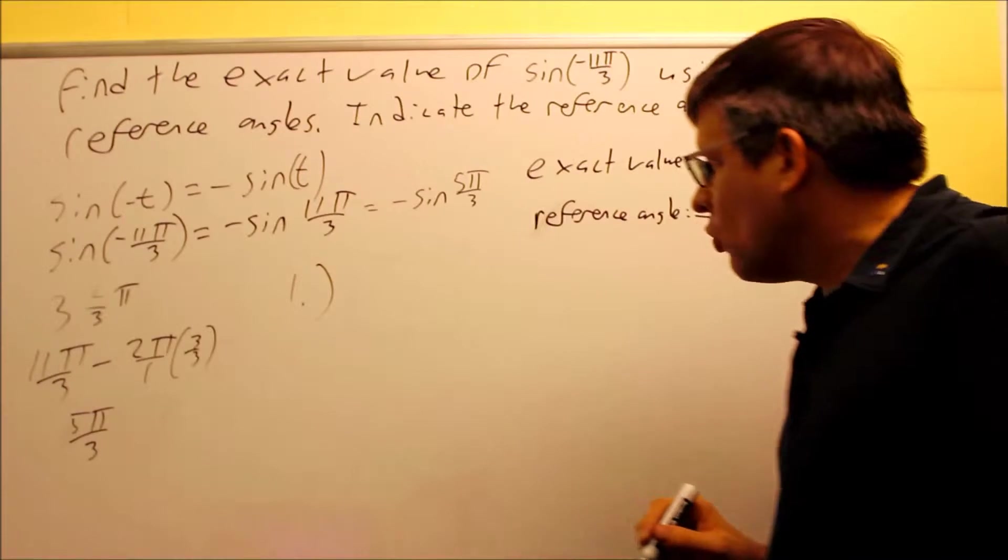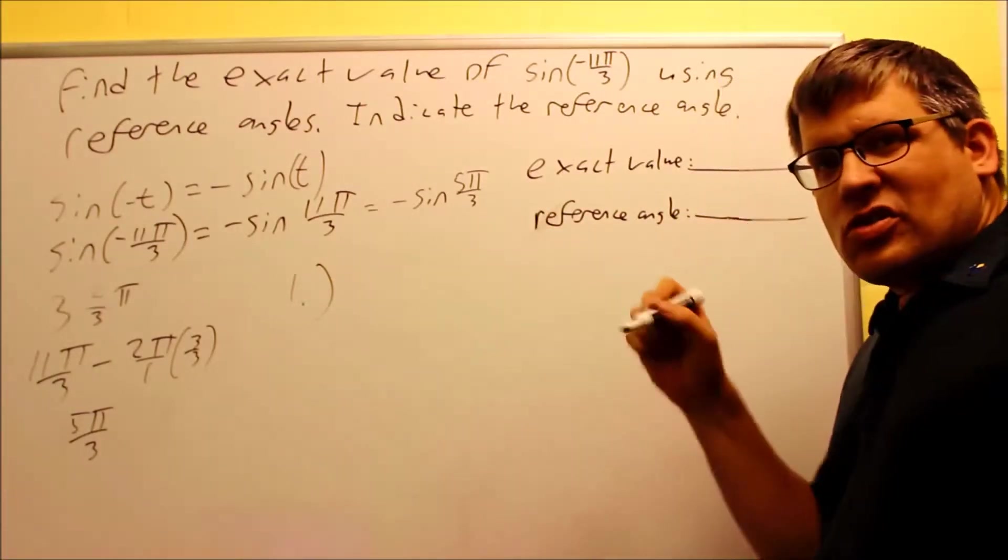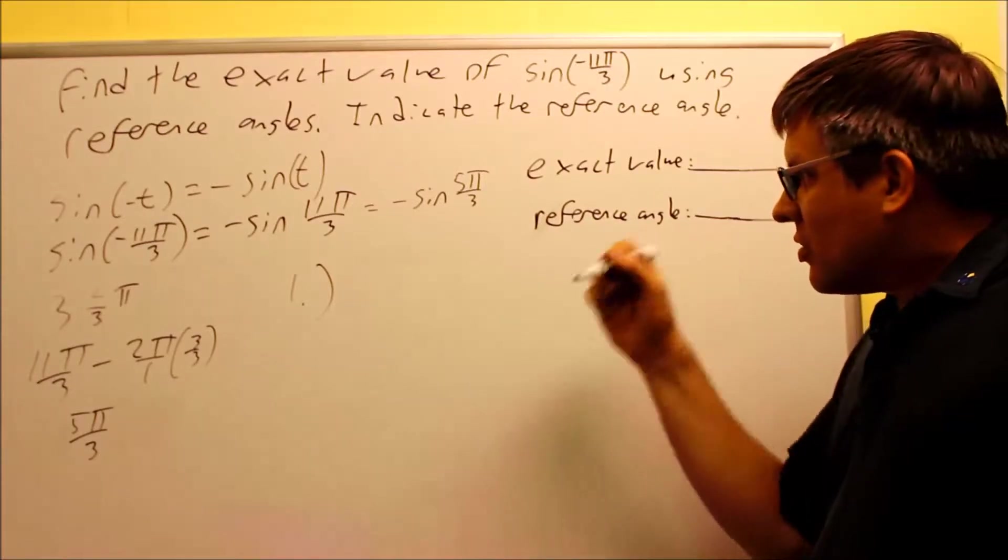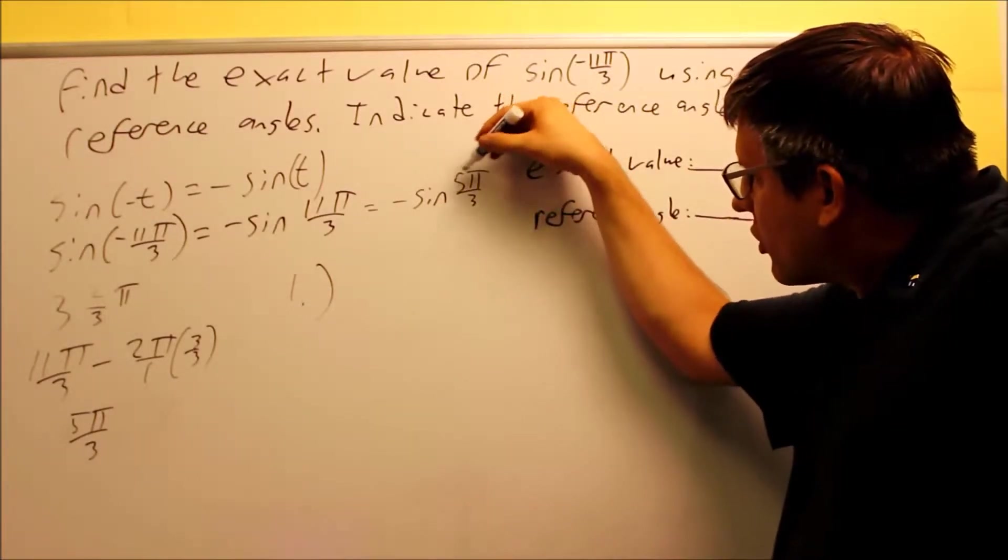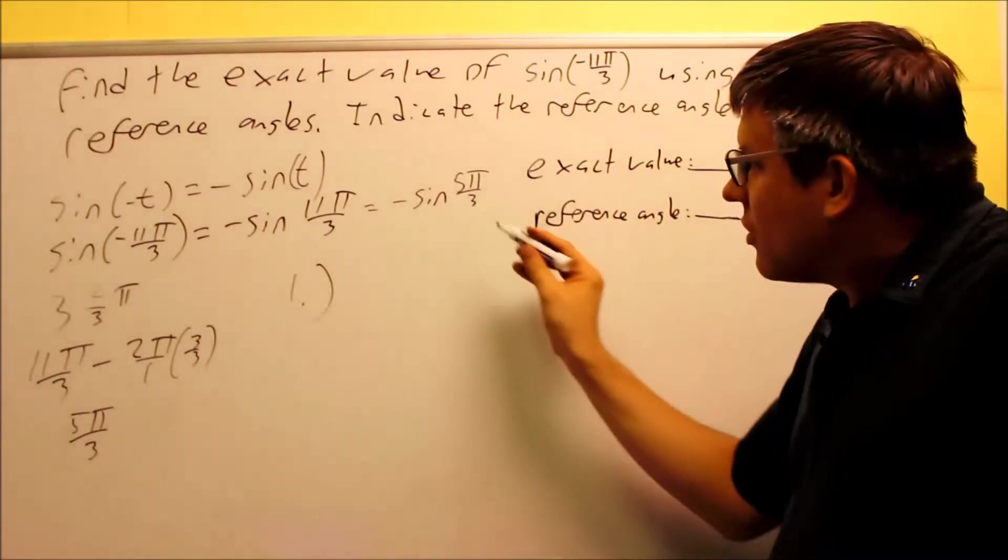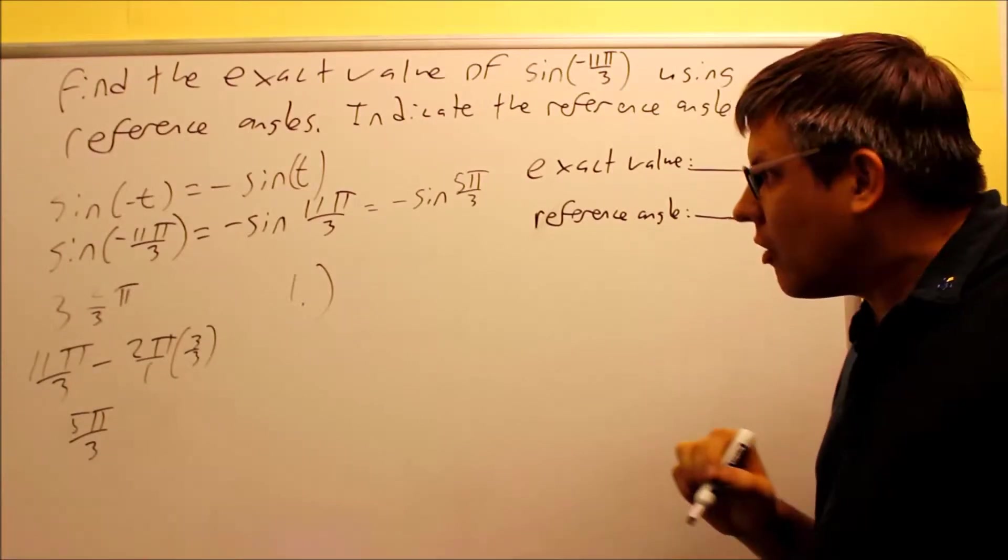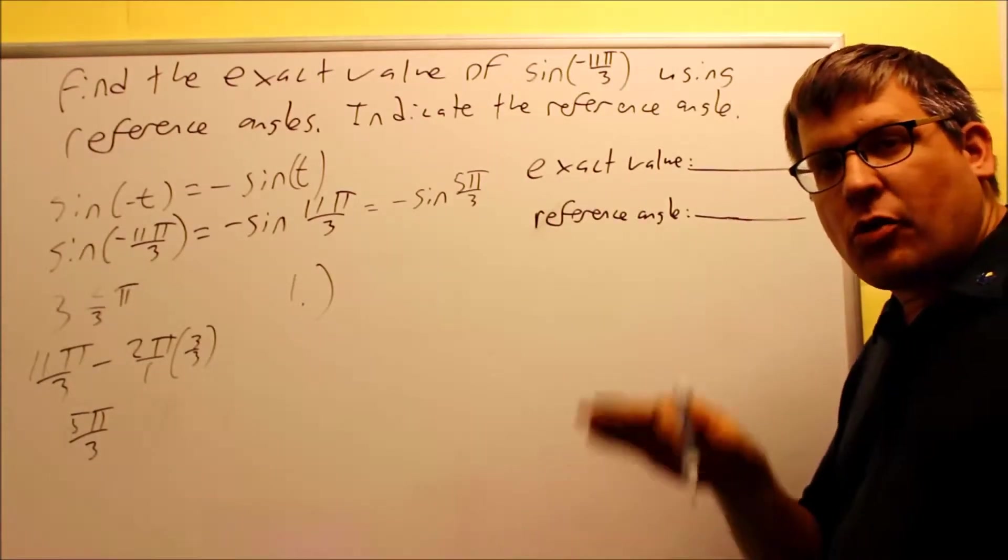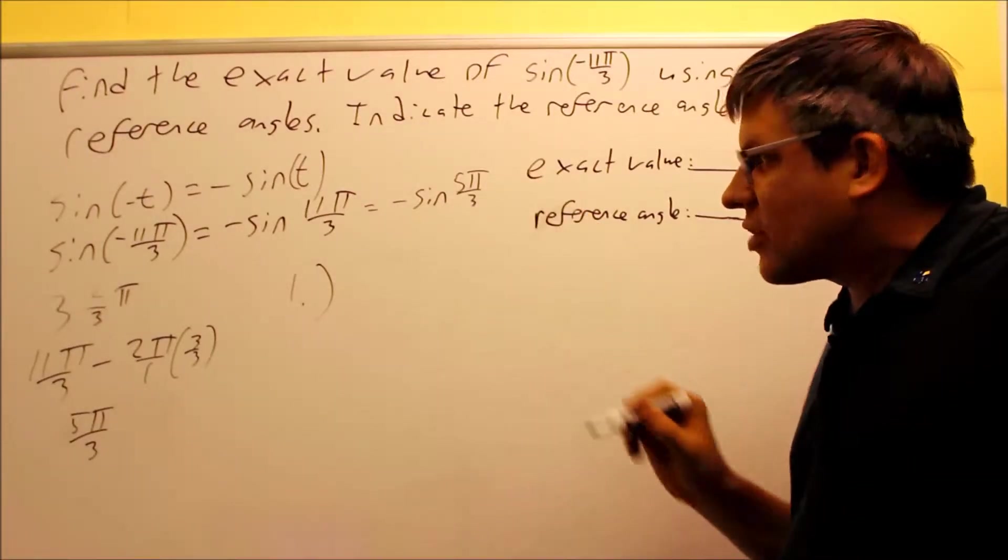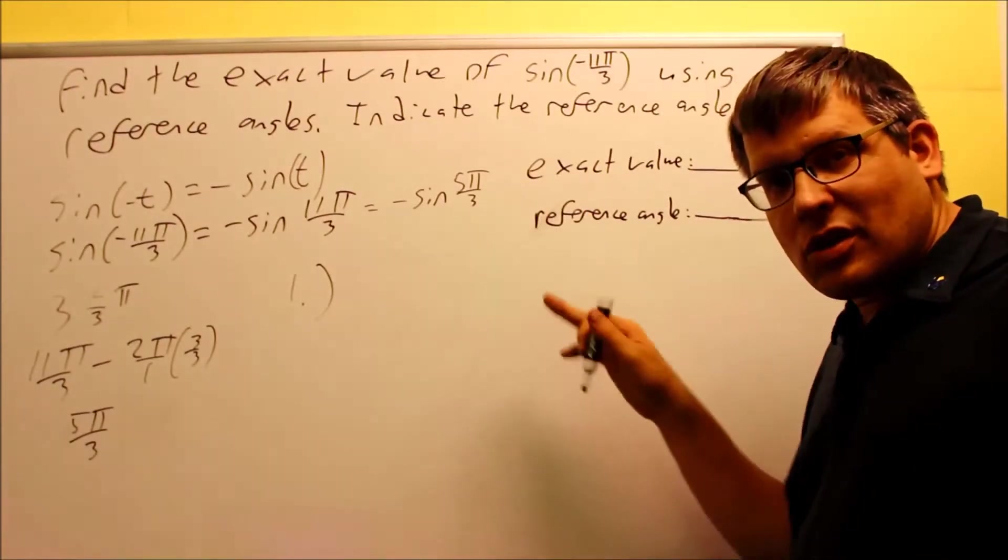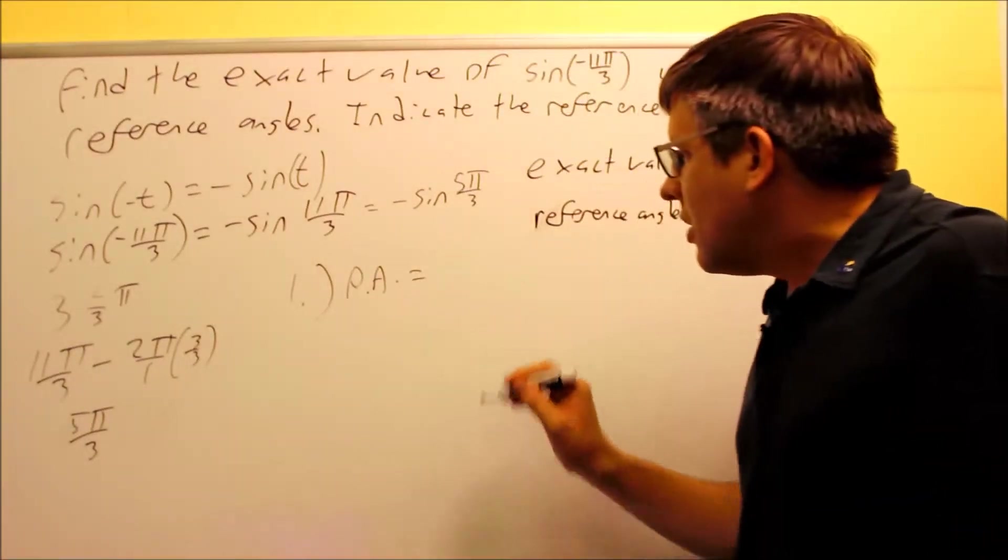Step number one, we want to find the reference angle. Now, 5π over 3 is just slightly less than 6, which is going to be 6 over 3. So 6π over 3 would be 2π. So I know I'm just slightly less than 2π, which means that I would have this drawn in the fourth quadrant. If you want to do the whole problem in terms of degrees like I did in the notes, that's perfectly fine. We'd find out that that's going to be in the fourth quadrant. So because it is in the fourth quadrant, my reference angle formula is going to be 2π minus 5π over 3.